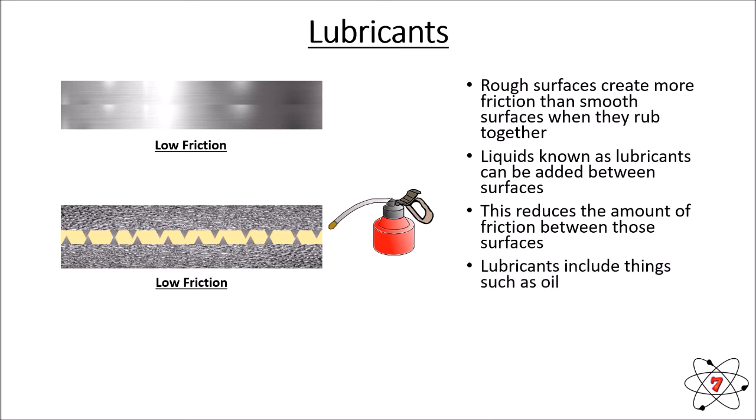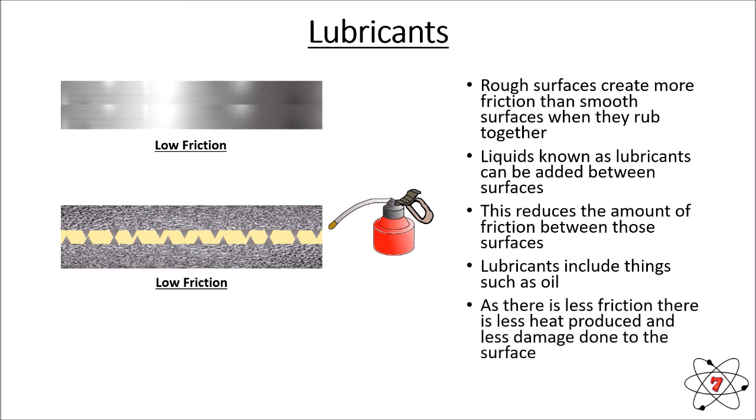Lubricants include things such as oil, which are the most common lubricants used in industry. With less friction there is obviously going to be less damage and less heating — which is a good thing in many situations.